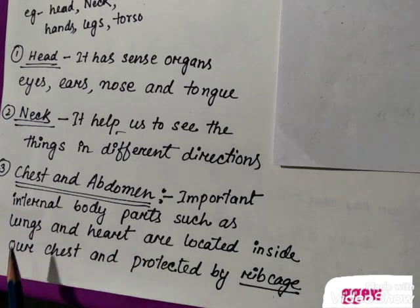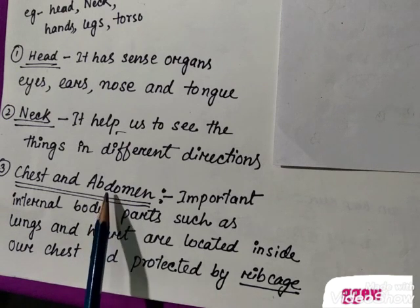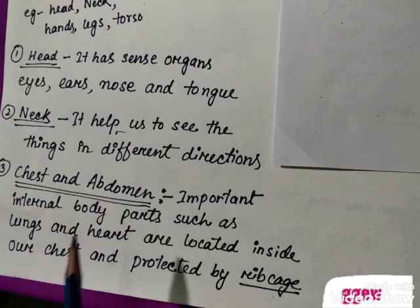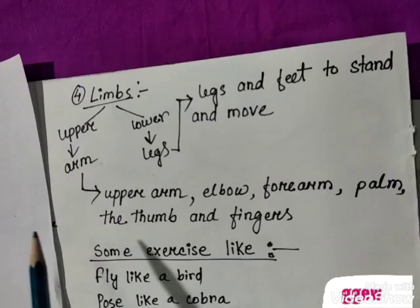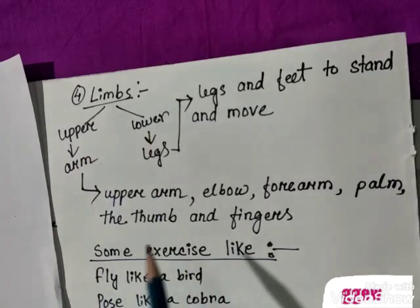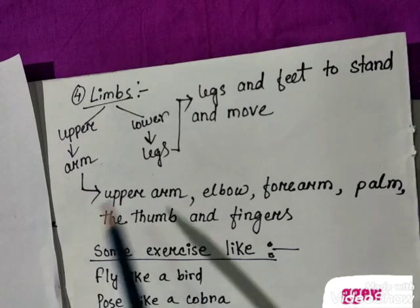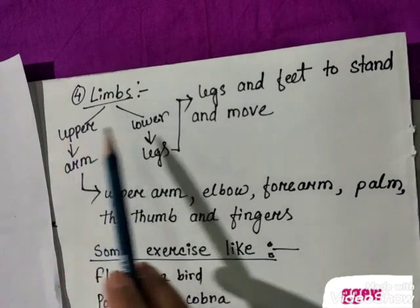Next comes chest and abdomen. Inside the chest we have some internal body parts — the lungs and heart — which are protected by the rib cage. The abdomen is a soft part below the rib cage.